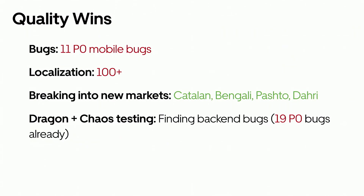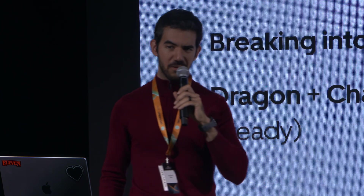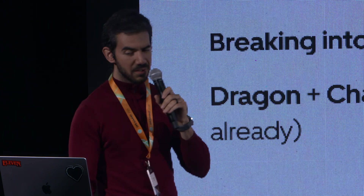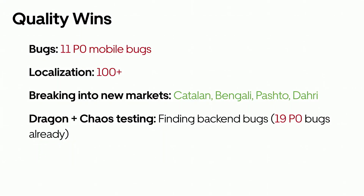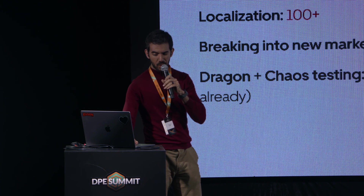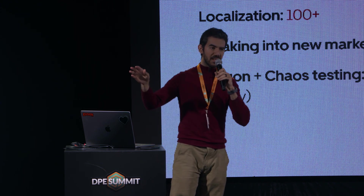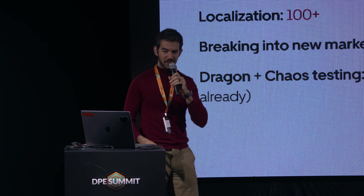Here are some of our quality wins. We've detected 11 high-priority bugs — the kind that would prevent riders from requesting trips or drivers from accepting them. Every time one of those escapes, we lose around two million dollars, so that's a lot of money saved. We've also found around 100 unlocalized content issues. Uber tries to break into new markets through new products, cities, or languages — Dragon and Crawl helped streamline language quality for Catalan, Bengali, Pashto, and Dari.